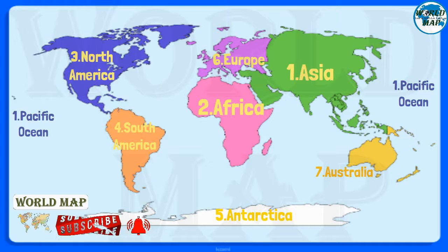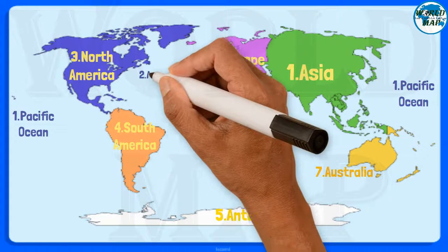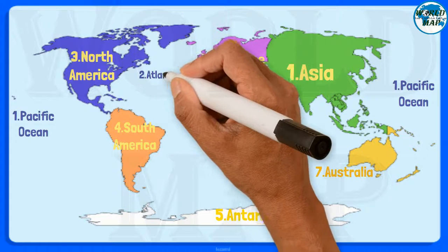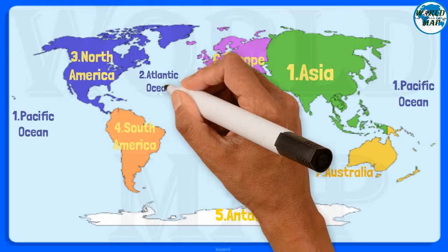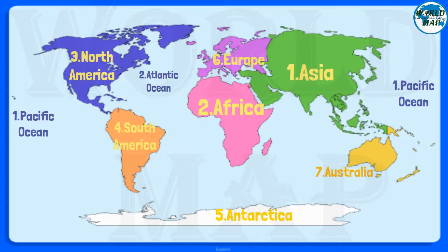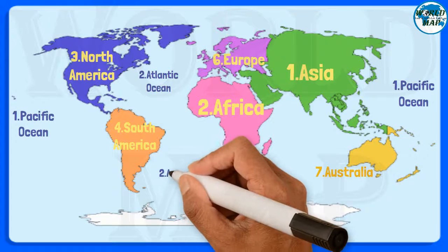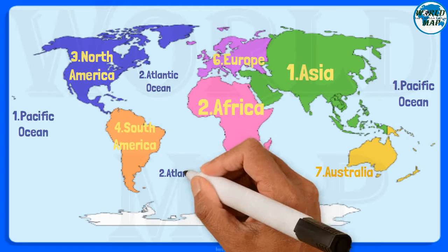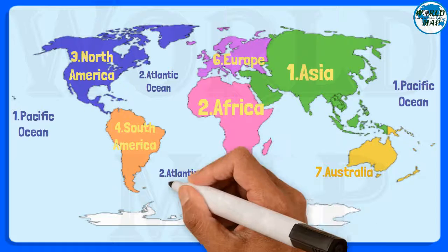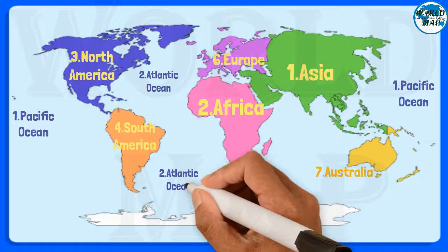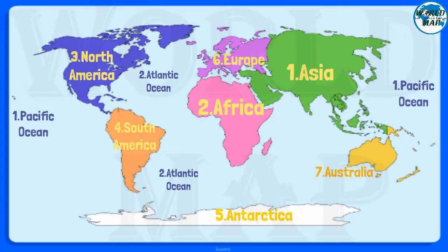Number 2: Atlantic Ocean. The Atlantic Ocean is situated between the Americas and the European/African continents. It is the second largest and saltiest ocean in the world.